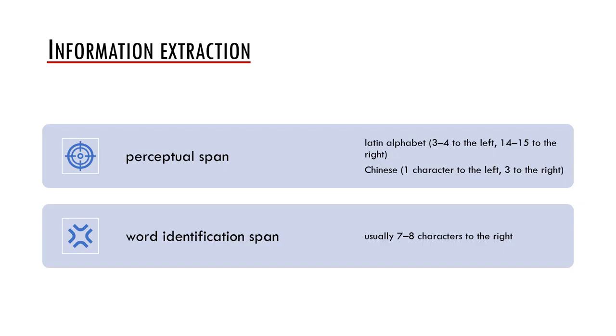Importantly, in scripts which are written from right to left, such as Arabic, the span is reversed and is longer to the left. The word identification span is shorter and usually it consists of seven to eight characters to the right of the fixation. In other words, there is a difference between what we can perceive during the fixation and what we can consciously identify.